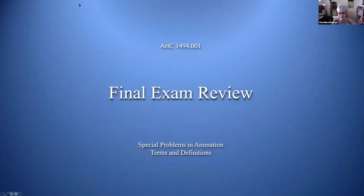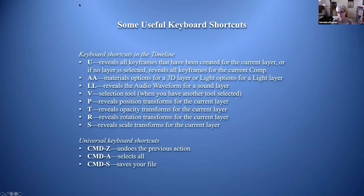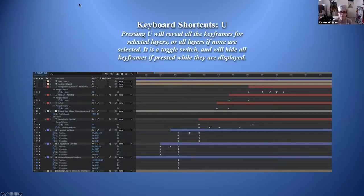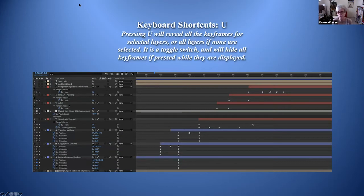Here's the final review. Remember the keyboard shortcuts — you'll have to say what certain keyboard shortcuts mean, possibly in a matching format. The most important one is U. When you press U, whatever layer you have selected — or all layers if none are selected — it's a toggle switch that shows what type of motion or keyframes you have set. If they're already shown, it collapses them so you can see more of your timeline.